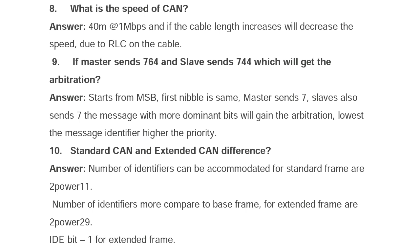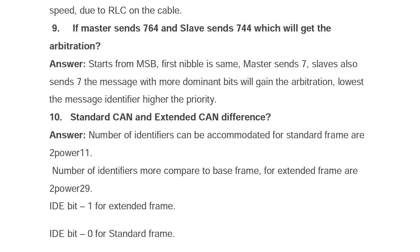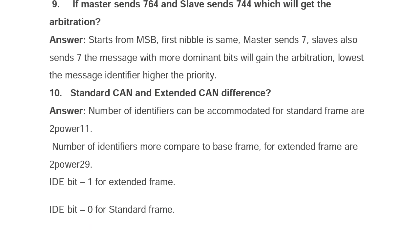What is the difference between standard CAN and extended CAN? The number of identifiers that can be accommodated in a standard frame is 2 to the power of 11. For extended frames, the number of identifiers is more compared to the base frame — 2 to the power of 29. The IDE bit is 1 for an extended frame and 0 for a standard frame.